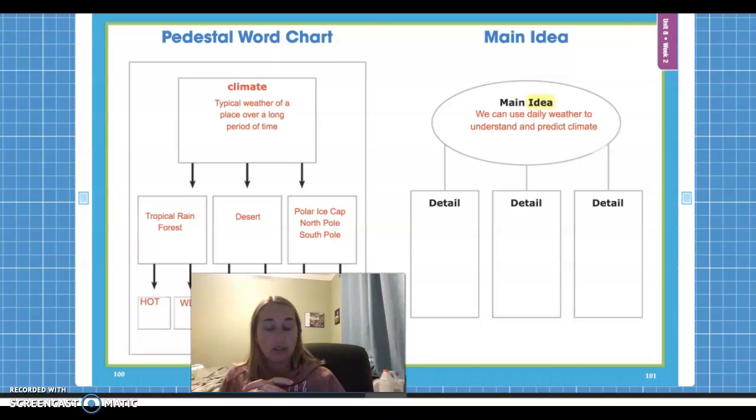Remember the title is Earth's weather and climate. Go ahead and pause the video, look back and then come back. All right, so the main idea here is we can use daily weather to understand and predict climate. So we use the daily weather patterns in order to say what a certain climate is for a certain region.